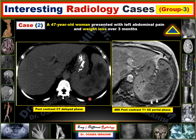There are lesions appearing as hypodense areas in the spleen on CT, and also appearing hypointense on the MRI sequence. Let's go to the discussion to discuss these lesions.